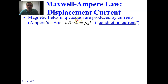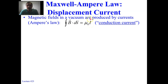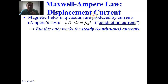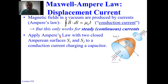Magnetic fields in a vacuum are produced by currents — what we call conduction current. We often think of conduction current as existing on a conducting piece of wire. Is there another way in a vacuum to get a string of moving charges involving a time derivative? Ampere's law only works for steady, continuous current. Let's think of an example where this leads to something more deeply theoretical.